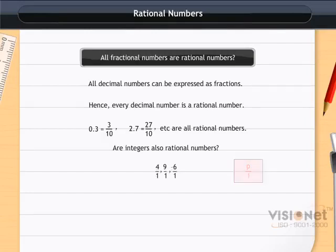We can write the integer 0 as 0 by 1 or 0 by 2 or 0 by 5, etc. Hence, it is also a rational number. Thus, all integers are rational numbers.